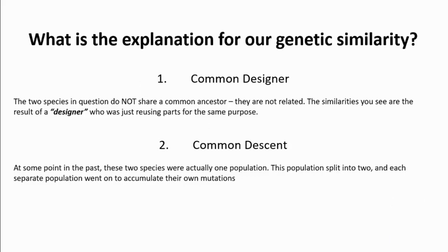The second explanation is common descent. At some point in the past, the two species we're looking at were actually part of one population. That population split into two, and each separate population went on to accumulate its own mutations. For example, humans and chimpanzees are very similar genetically, and the common descent explanation is that we split from a common population not very long ago — around six million years ago — so we haven't had much time to accumulate mutations in our separate branches. Whereas humans and birds separated a long time ago and therefore have had a lot of time on separate branches to accumulate mutations, which explains why we are so genetically different.